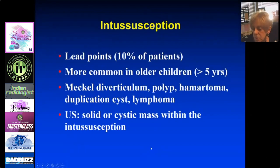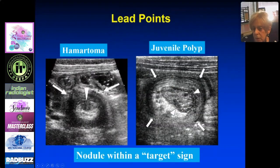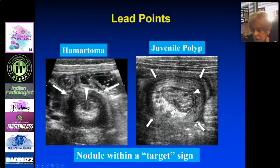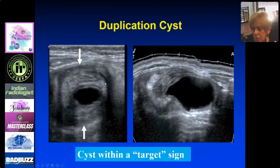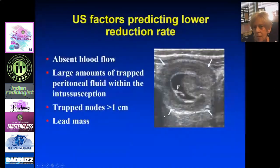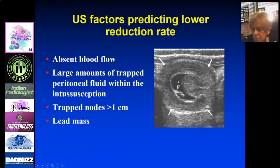On ultrasound, you're going to see a mass within the intussusception. Here is a multi-layered mass in the right upper quadrant — the echogenic part is the mesentery that accompanies the bowel. This lead point was a hematoma. Here is another intussusception target sign with multiple layers, where the echogenic part is the mesentery and omentum — this lead point was a polyp. Here's another intussusception with multiple layers and an anechoic mass that turned out to be a duplication cyst.